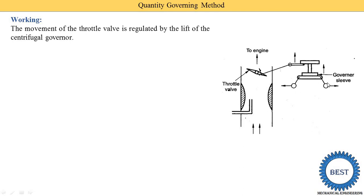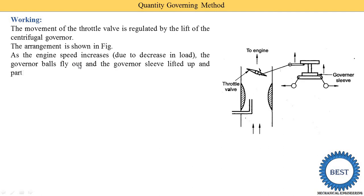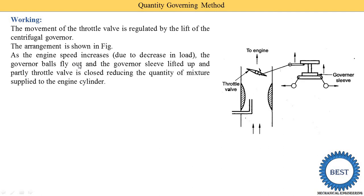In a governor there are different parts: the fly balls and sleeves. It is generally a centrifugal governor and the arrangement is shown in this figure. As the engine speed increases — for example when load is reduced, when a few people are removed from the bike or car, or we move in a downhill area — the governor balls try to fly outward as indicated by the arrows. The governor sleeve lifts up, and since the fly balls are connected with the sleeve, a link mechanism closes the throttle valve partially, reducing the quantity of mixture supplied to the engine cylinder.